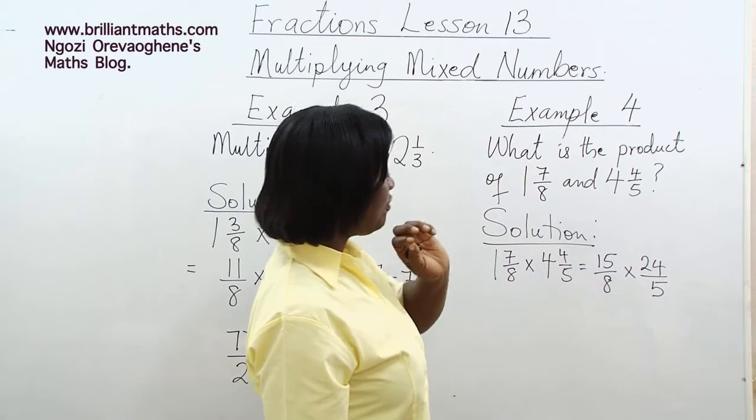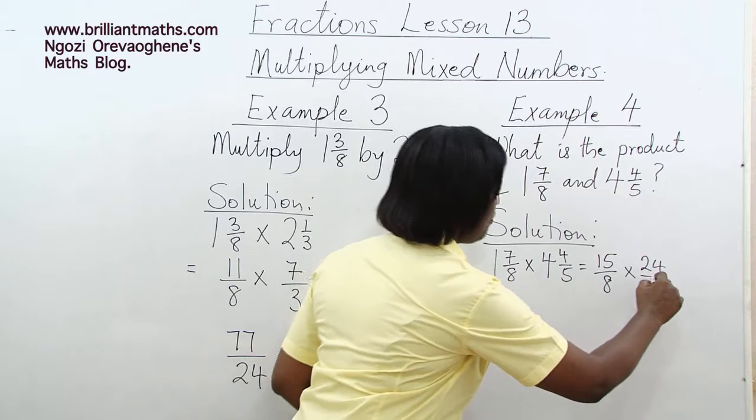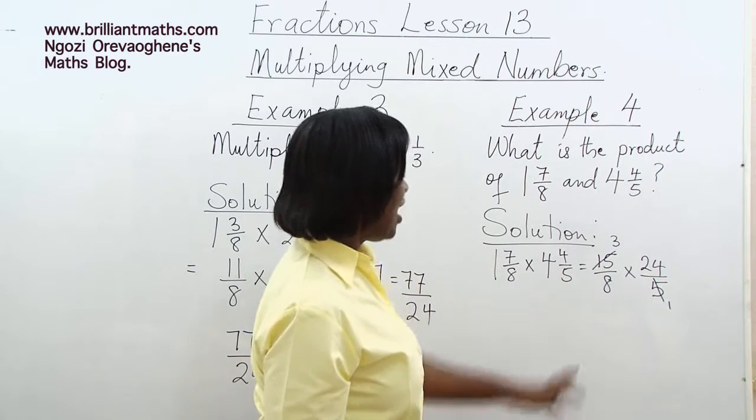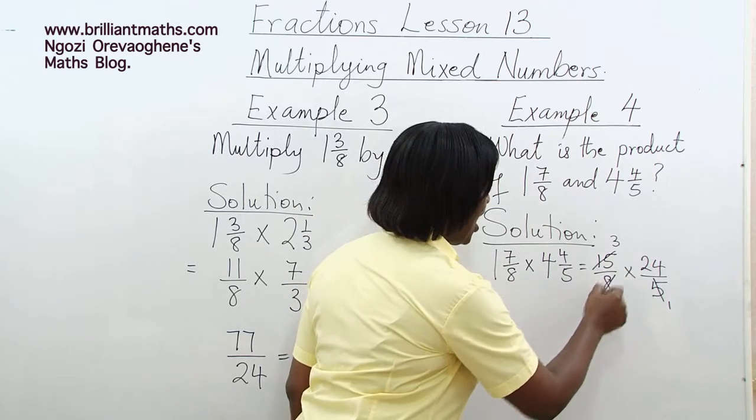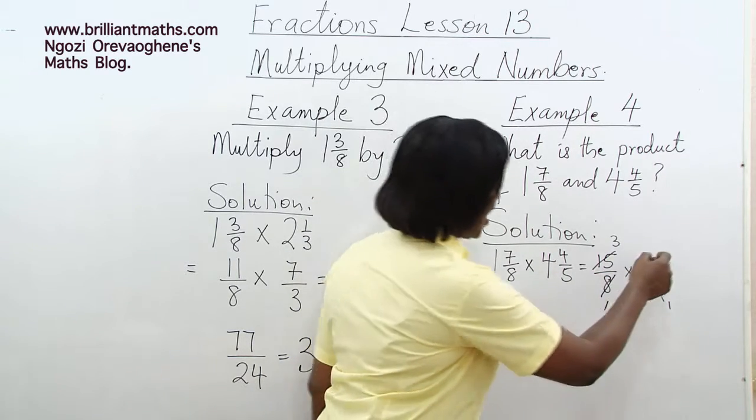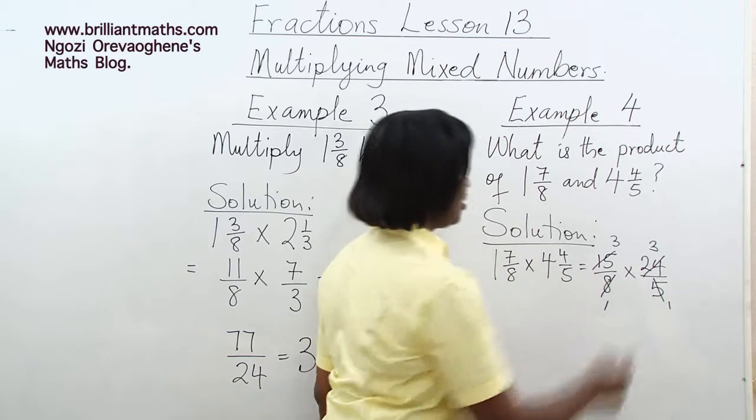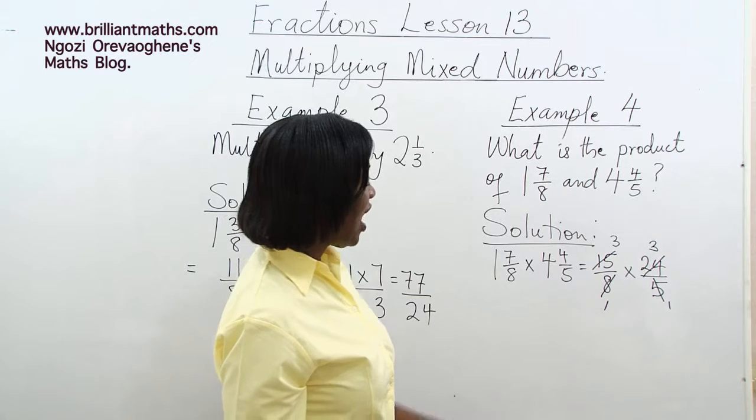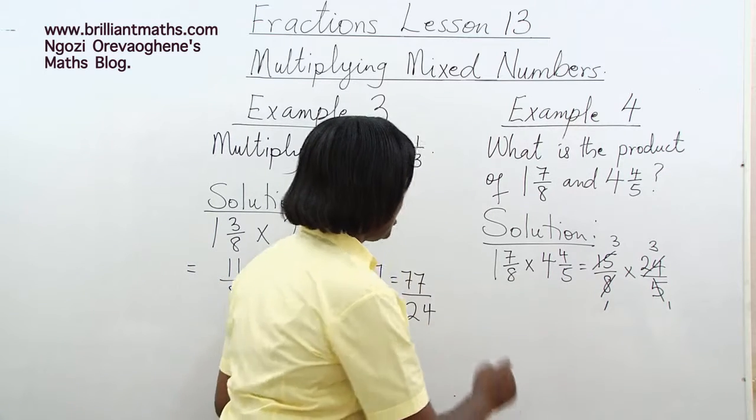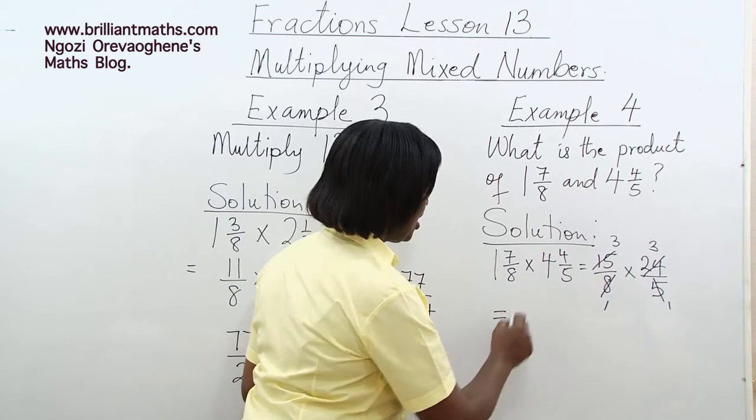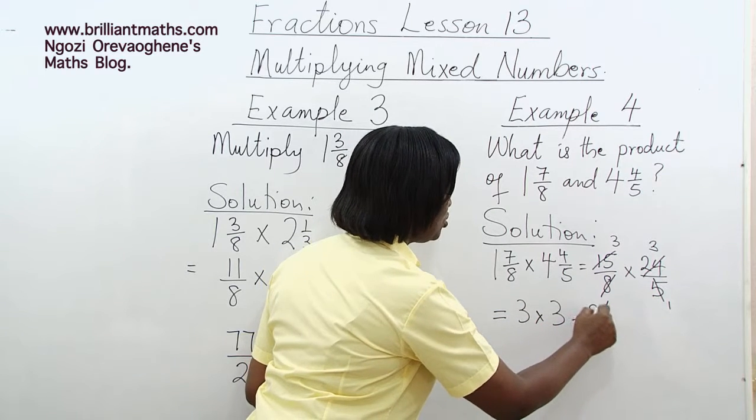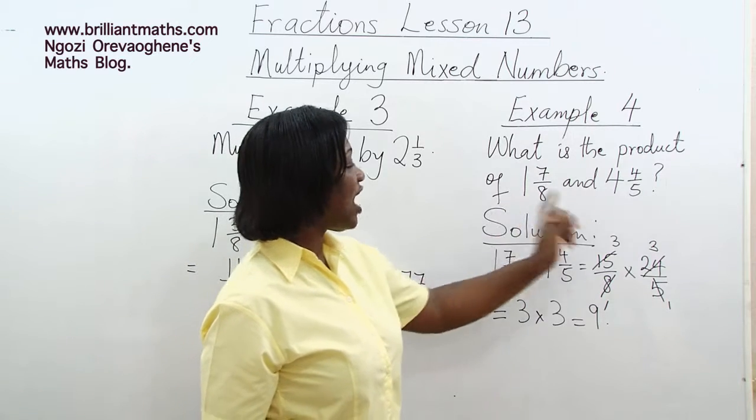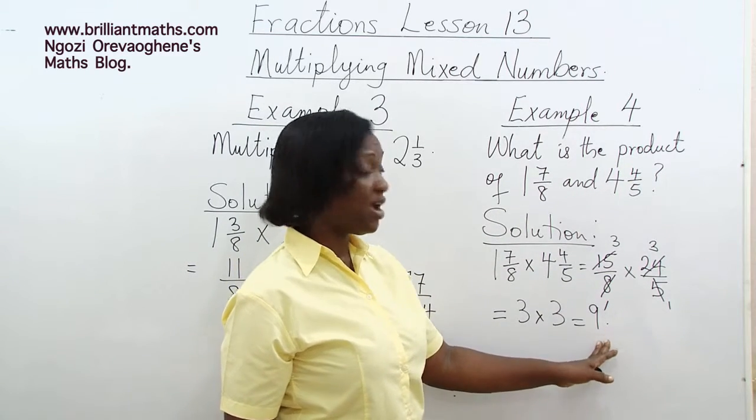We know that 5 is a factor of 15. So 5 in 5 is 1, 5 in 15 is 3. 8 is also a factor of 24. 8 in 8 is 1, and 8 in 24 is 3. We have only 3 times 3 in the numerator and 1 left as denominator. Our answer is actually 3 times 3, which is equal to 9. The product of 1 7 eighths and 4 4 fifths is equal to 9.